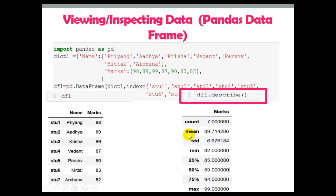The describe function will display the count, mean (average value), standard deviation, minimum value, the 25th, 50th, and 75th percentiles, and also the maximum value. So this function is used to view some basic statistical details about the DataFrame.